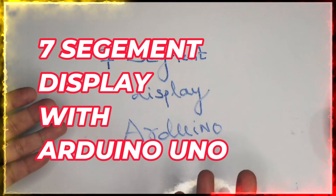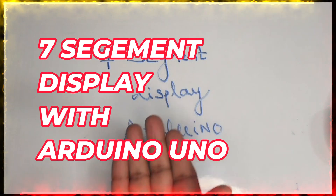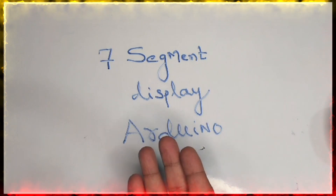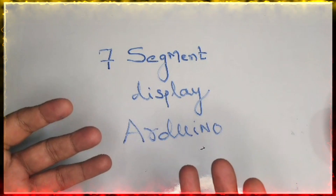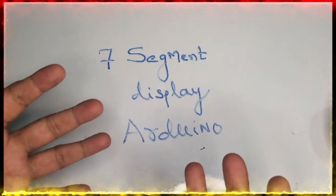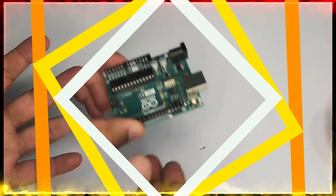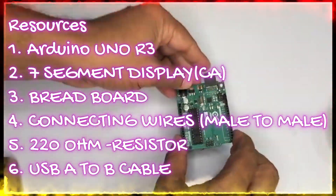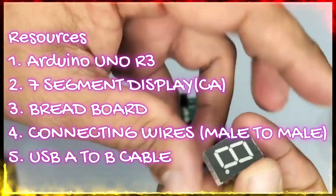Hi friends, welcome to our channel. Today we try to see the seven-segment display interface with Arduino. The seven-segment display is widely used in measurement in day-to-day life, so this is one typical example. For this project, the required resources we need — the first and most important one will be the Arduino, and the second most important one will be the seven-segment display.